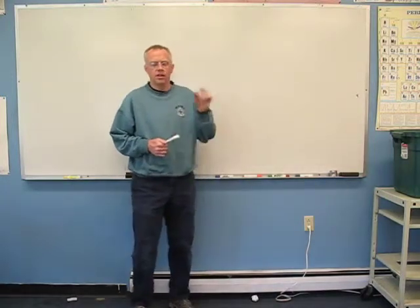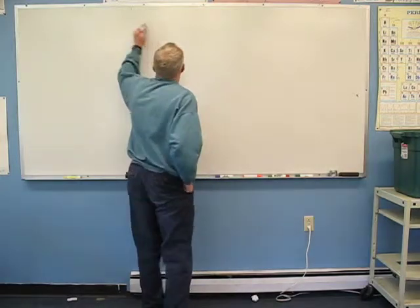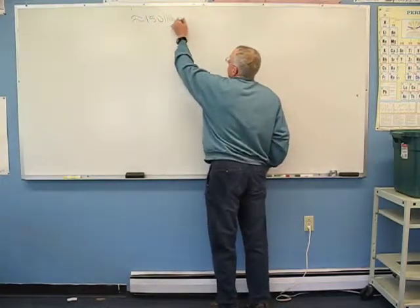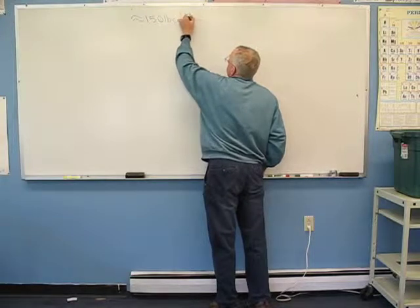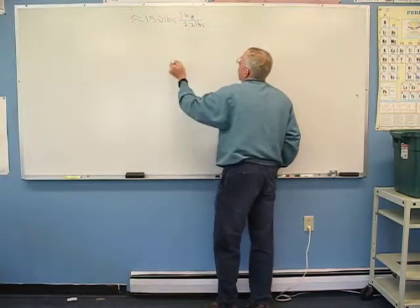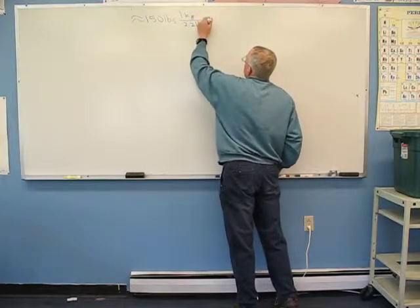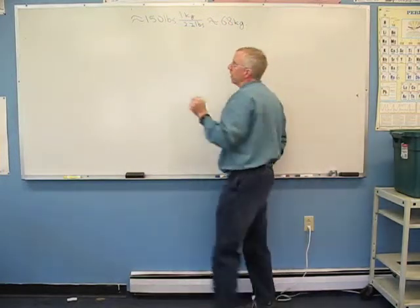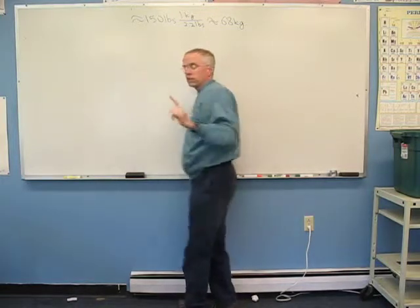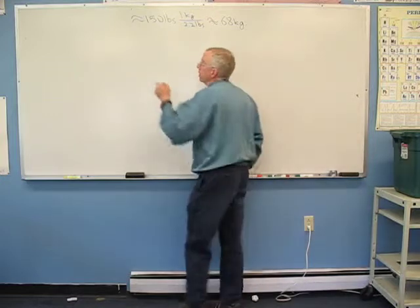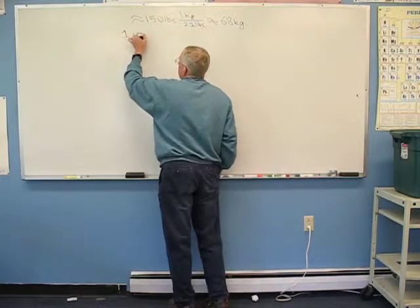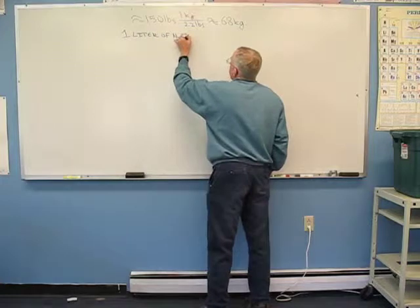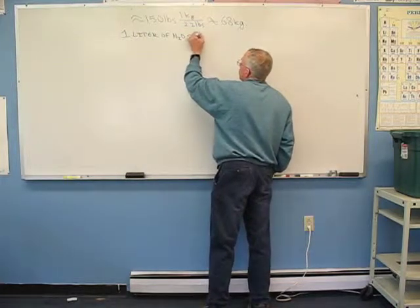One more thing I want to talk about in terms of units: I said that I am approximately 150 pounds, and I can convert that — one kilogram is 2.2 pounds — which makes me approximately 68 kilograms. A good example of a one kilogram mass is one liter of water, so one liter of H₂O is approximately one kilogram.